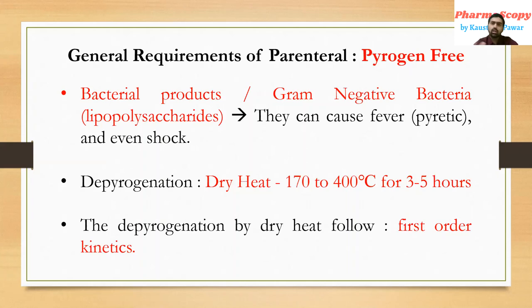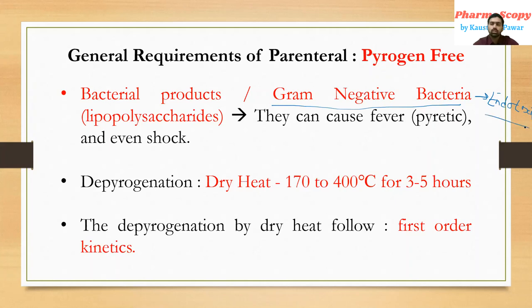Pyrogens are bacterial products. Endotoxins are toxic materials produced by gram-negative bacteria. Endotoxins and pyrogens should not be present in any parenteral formulation, as they may cause fever (pyretic response) and shock.